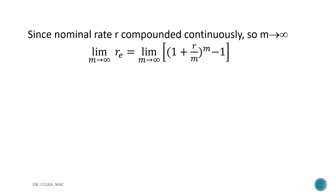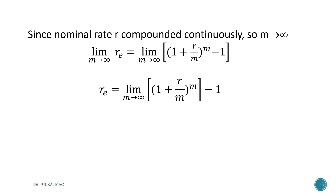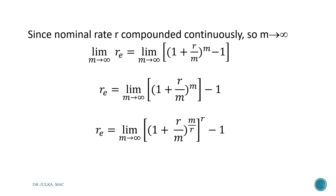Now taking the limit as m tends to infinite on both sides, Re equals the limit as m tends to infinite of 1 plus r upon m, whole raised to the power m, minus 1. Therefore, the effective rate of interest equals e raised to the power r minus 1.